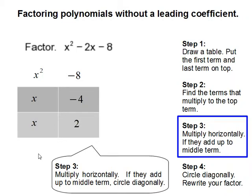Step 3. Multiply horizontally. If they add up to the middle term, circle diagonally. So we're going to multiply x and negative 4. That gets us negative 4x. Then x times 2. That gets us 2x.